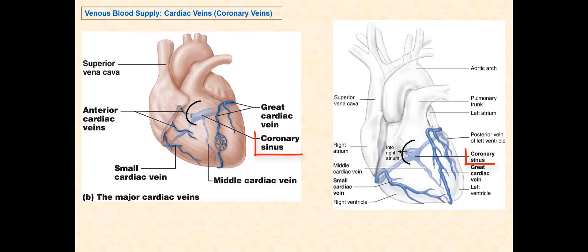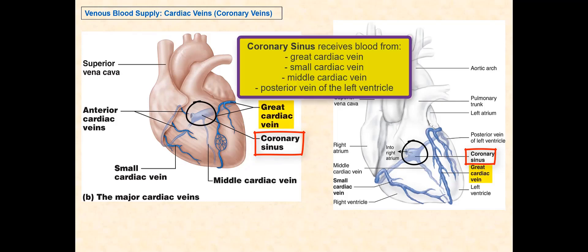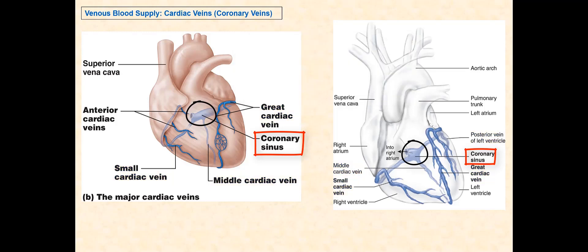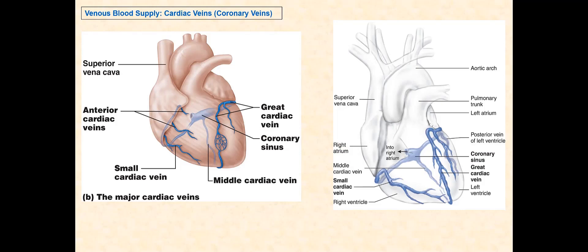The coronary sinus is a large vein that receives blood from the great cardiac vein, the small cardiac vein, the middle cardiac vein, and the posterior vein of the left ventricle. It is found along the coronary sulcus at the posterior side of the heart. The coronary sinus drains the deoxygenated blood into the right atrium through the opening of the coronary sinus.